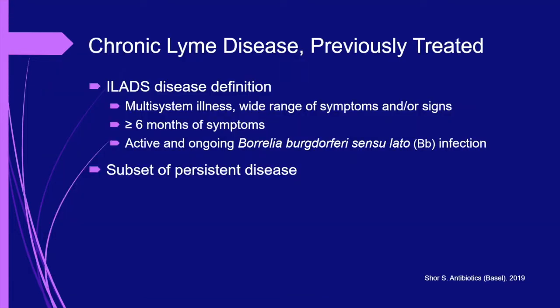The International Lyme and Associated Diseases Society, ILADS for short, would say that this gentleman had chronic Lyme disease. ILADS recently published a disease definition for chronic Lyme disease with two subcategories: chronic Lyme disease untreated, and chronic Lyme disease previously treated. Like PT-LDS, chronic Lyme disease previously treated is a research definition with strict inclusion criteria. It requires patients have multi-system symptoms ongoing for six or more months following therapy and direct laboratory evidence of ongoing infection—either a positive culture or PCR for Borrelial species known to cause Lyme disease. Until we have testing that can reliably identify active infection, this disease definition has limited clinical utility.